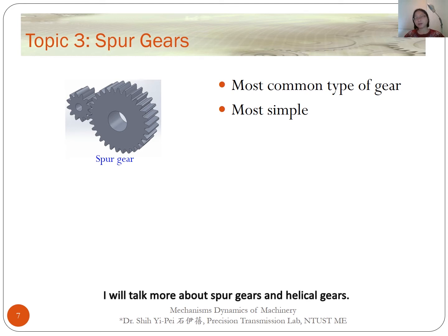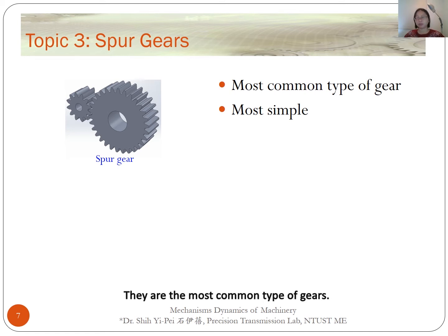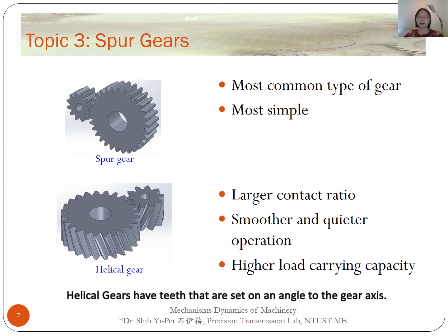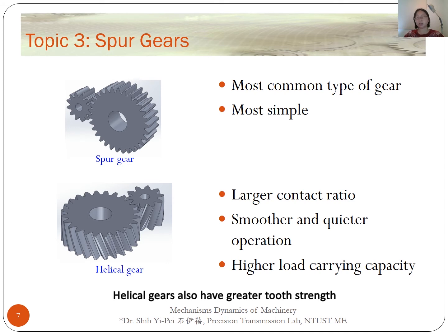I will talk more about spur gears and helical gears. Spur gears have straight teeth that are produced parallel to the axis of the gear. They are the most common type of gear and also the most simple. Helical gears have teeth that are set at an angle to the gear axis. Since the teeth engage more gradually, they have a larger contact ratio, enabling smoother and quieter operation than spur gears.